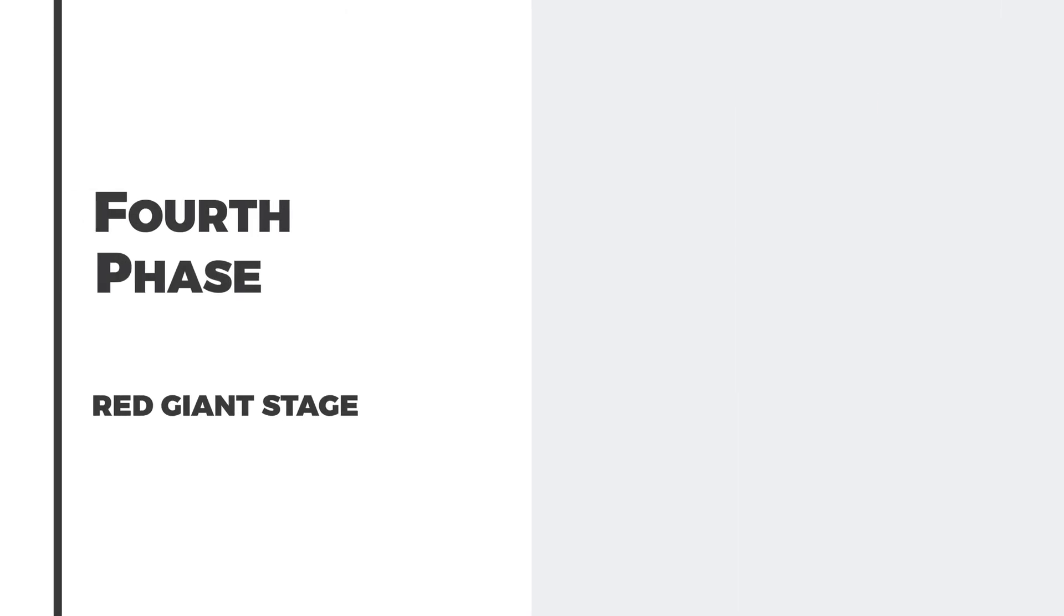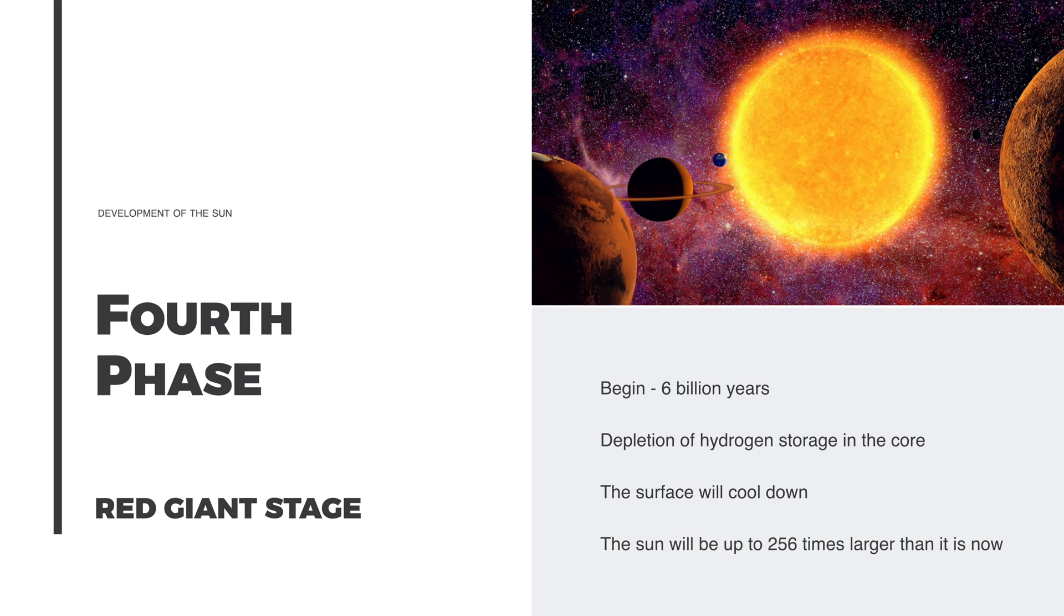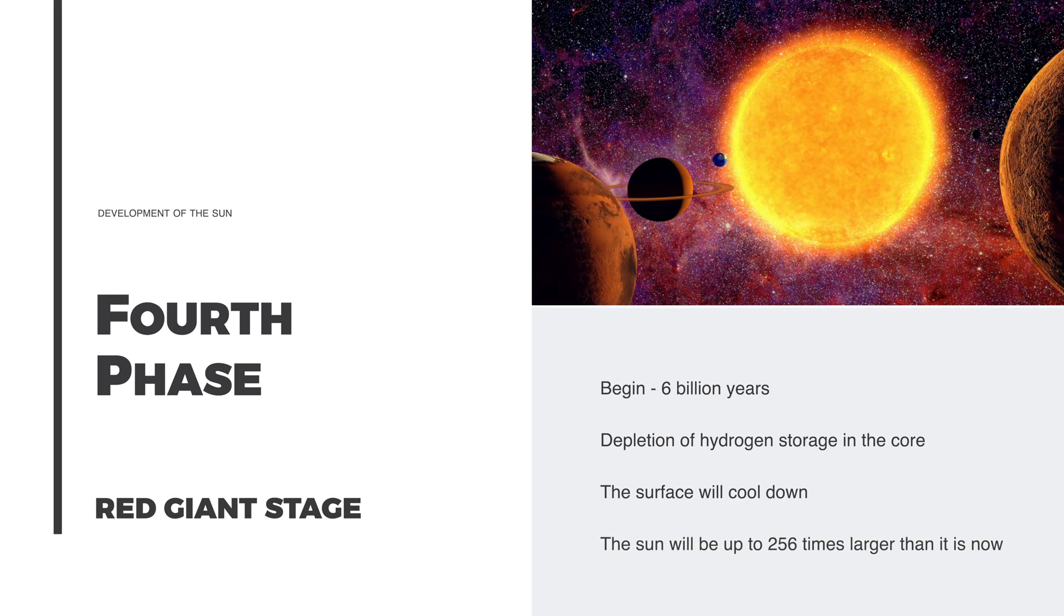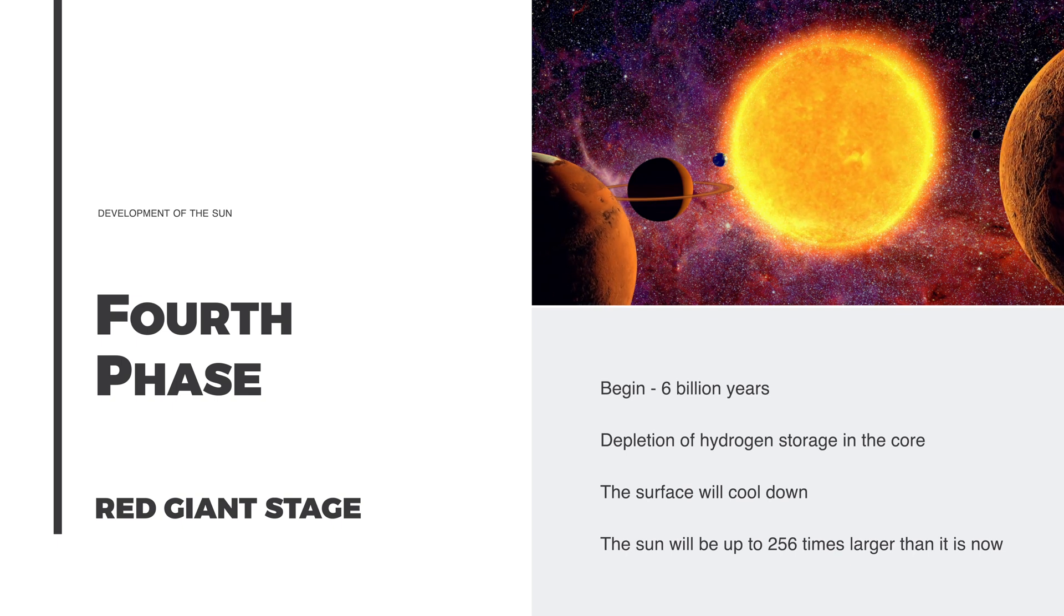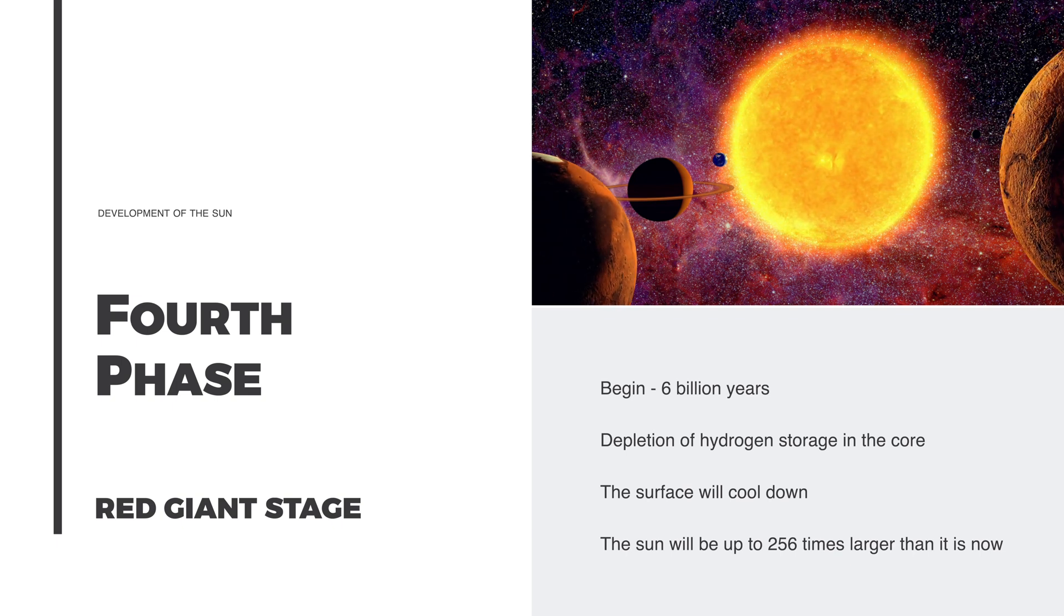The fourth phase will be the red giant stage, which will begin in about 6 billion years. Then the Sun will have exhausted its hydrogen fuel in the core and will swell into a red giant. Its surface will cool, but its luminosity will increase. It may swallow or destroy some of its inner planets.